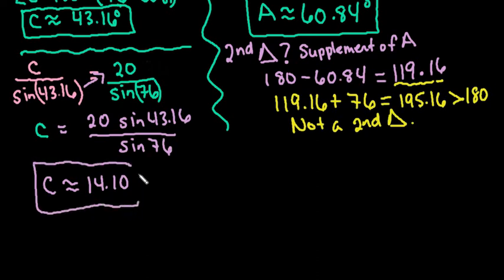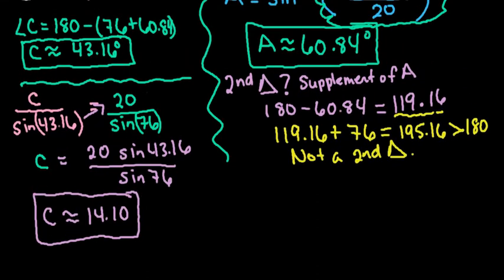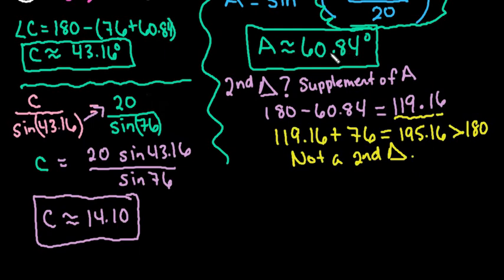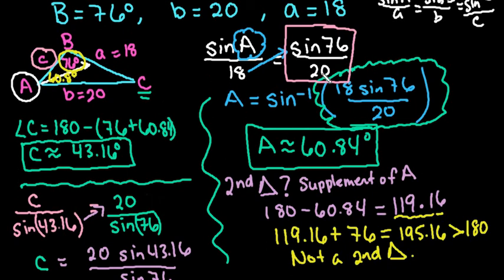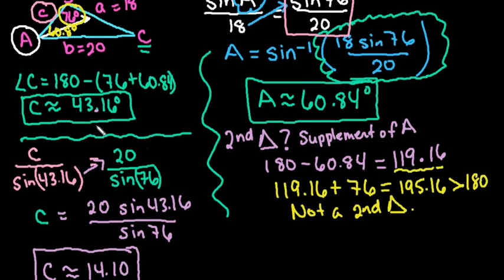So we have solved this triangle. We have found all three missing items. We found angle A is approximately 60.84 degrees, angle C is approximately 43.16 degrees, and side C is 14.10. Make sure that you remember that the largest side is always across from the largest angle. The shortest side is always across from the smallest angle. So we found that side C is the shortest because it's opposite of the smallest angle, 43.16 degrees. As always, thanks for watching. If you have any questions, please let me know. If there are additional topics that you need me to cover, please let me know that as well.